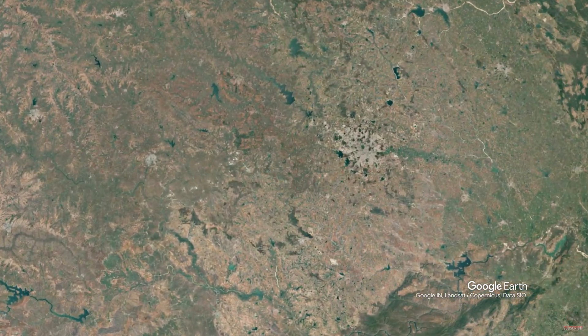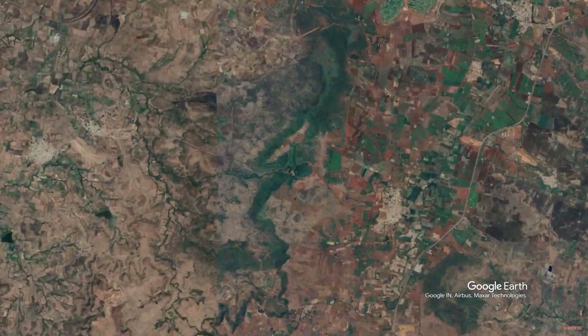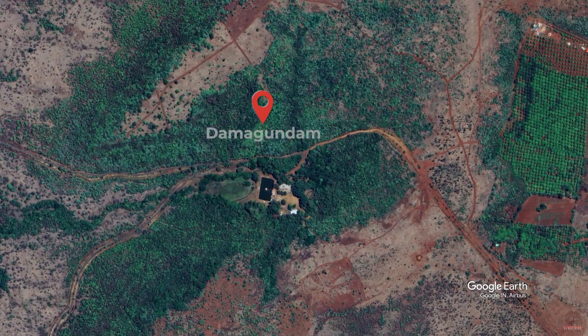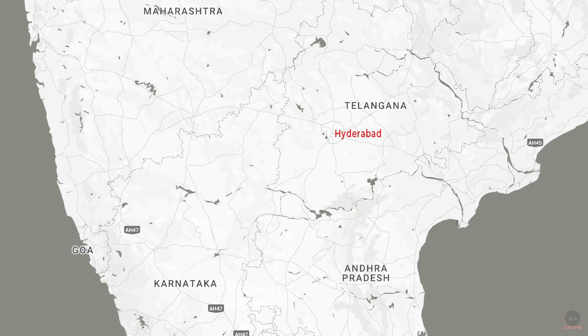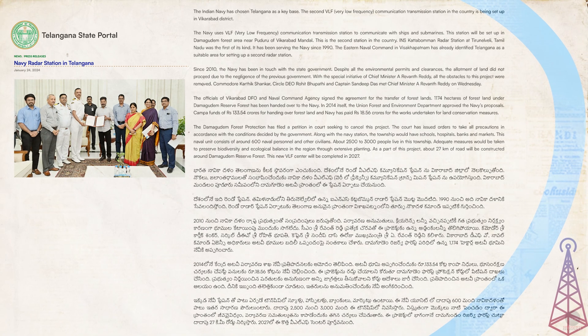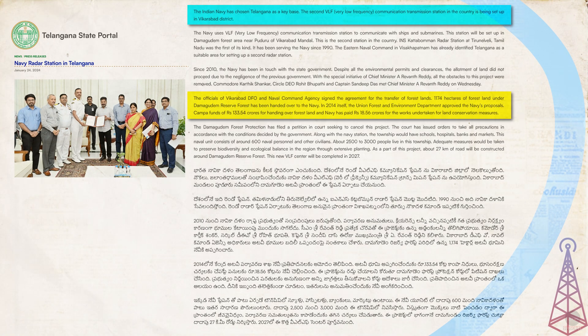Dhamagundam is a forested area near Pudur village in Vicarabad district of Telangana. It's about 75 km away from Hyderabad and more than 300 km away from the coast. In January this year, the Telangana government signed the agreement with the Indian Navy for transfer of 1,174 hectares or about 2,900 acres of forest land under Dhamagundam reserve forest. A township will also be developed here with all the necessary amenities. More than 600 naval personnel will work in the naval station and the project is expected to be completed by 2027.